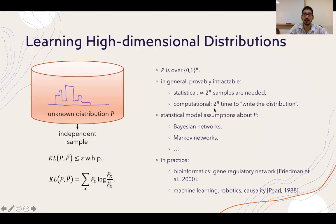This is a work on learning high-dimensional distributions. Let p be a distribution over the Boolean hypercube which is unknown to us, and we are getting independent samples from this distribution. Our goal will be to learn a distribution p-hat such that the KL distance between p and p-hat is at most epsilon with high probability. The KL distance is defined as the expectation of the logarithm of the ratio between the two probability mass functions, where the expectation is taken with respect to the first distribution.